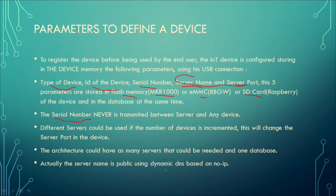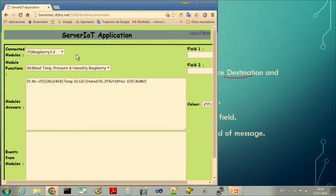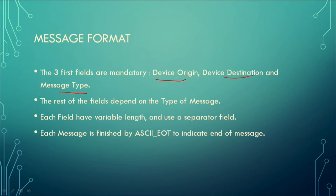The message format always has three mandatory fields: origin, destination, and message type, as we have seen in the application. The origin is the web browser, the destination is the connected module, and the type of message we want to send is specified. The rest of the fields depend on the message — we add parameters of variable length, finishing with an IoT terminator.